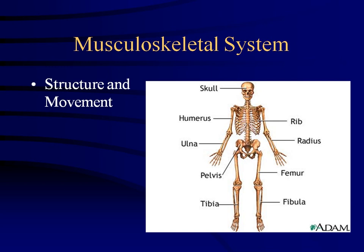There are three major categories of muscles: cardiac muscle, which is the heart muscle; smooth muscle, which includes all your organs, blood vessels, and bronchioles; and skeletal muscles, which are responsible for voluntary movement.